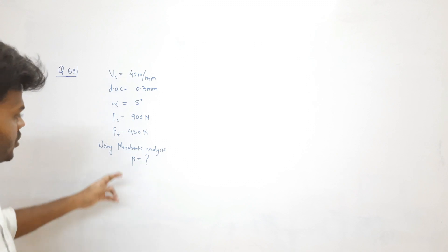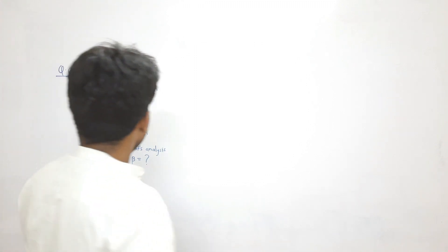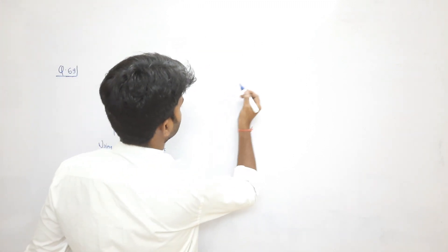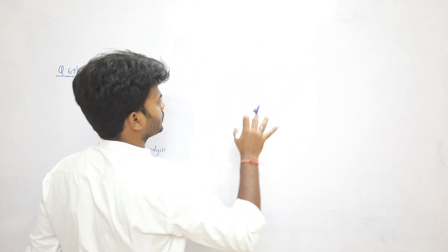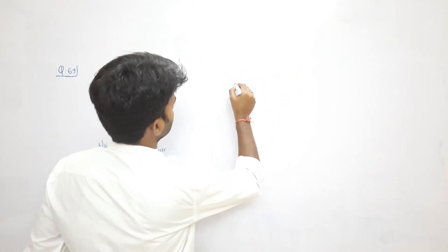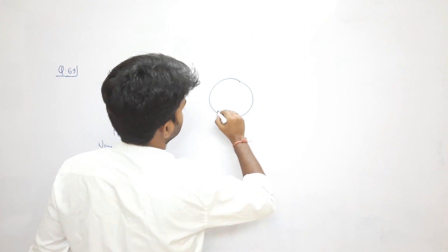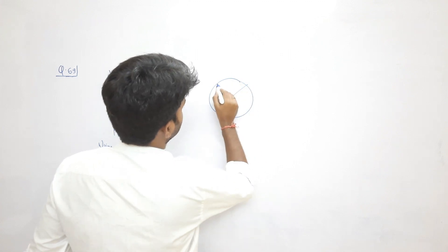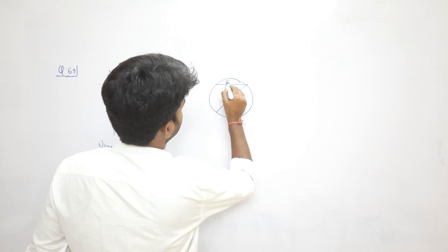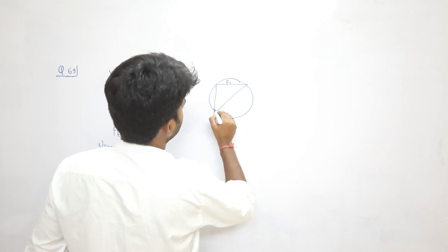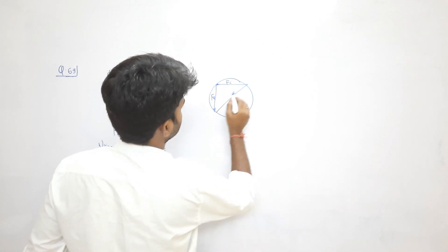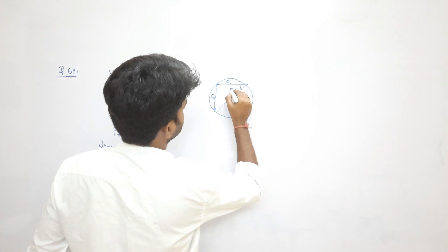we need to find friction angle beta. If we look at merchant analysis, this is a circle, this is my cutting force, and this is the thrust force. This angle is beta minus alpha.